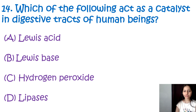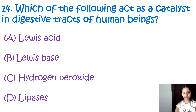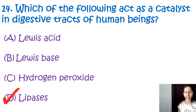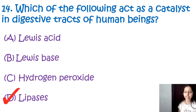Question number 14: Which of the following acts as a catalyst in the digestive tract of human beings? Options are Lewis acid, Lewis base, hydrogen peroxide, or lipase enzyme. The correct option is D, lipases. These are enzymes that act as a catalyst in the digestive tract of human beings. They catalyze the hydrolysis of dietary fats — that is, triglycerides — into fatty acids and glycerol, which facilitates their absorption in the digestive system.